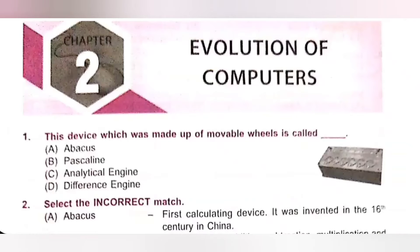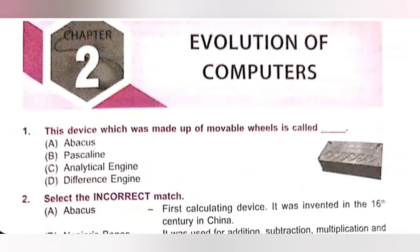Question 1: This device which was made up of movable wheels is called — A. Abacus, B. Pascaline, C. Analytical engine, D. Difference engine. The device given in the figure is Pascaline. It was designed and built by French mathematician and philosopher Blaise Pascal. It could do addition and subtraction with numbers being entered by manipulating its dial. So option B is the correct answer.